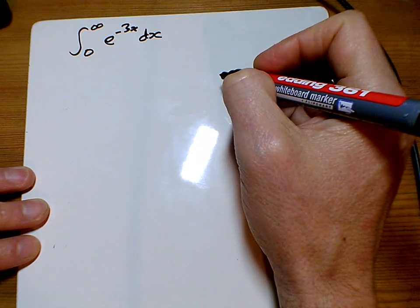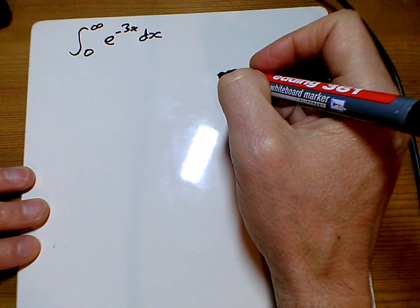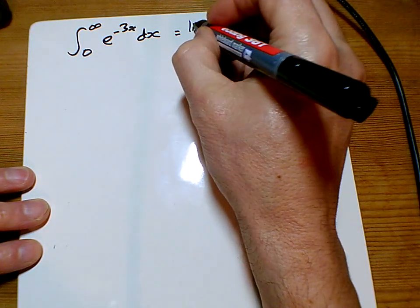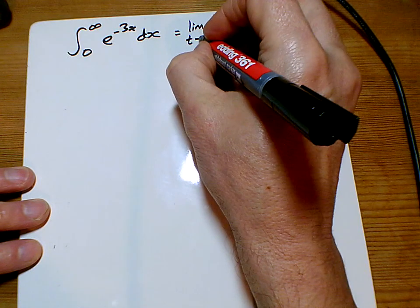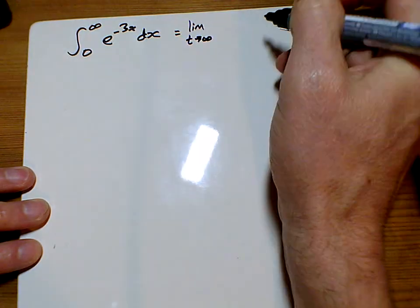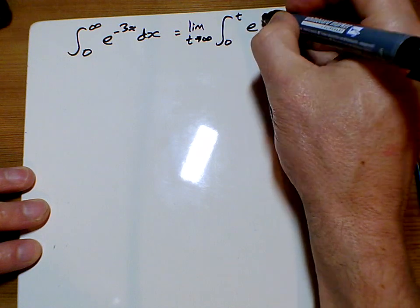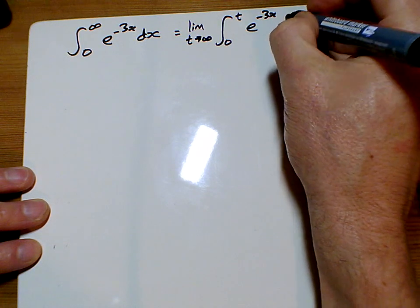And for 1c, we're integrating from 0 to infinity of e to the minus 3x. So we replace the infinity with a limit as t tends to infinity of the integral between 0 and t of e to the minus 3x dx.